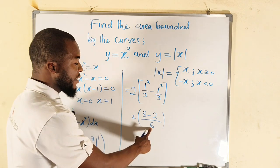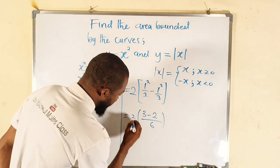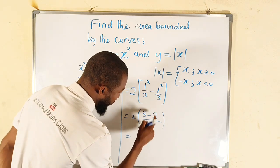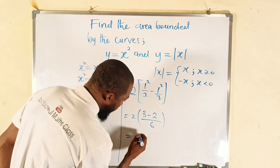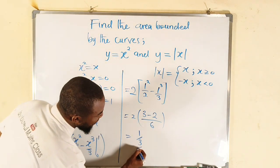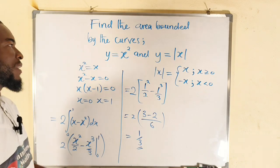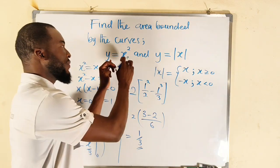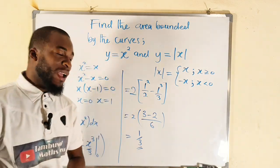So we have three minus two is one, divided by three, because two can go into six three times. And hence this is the total area bounded by the curves x squared and absolute value of x.